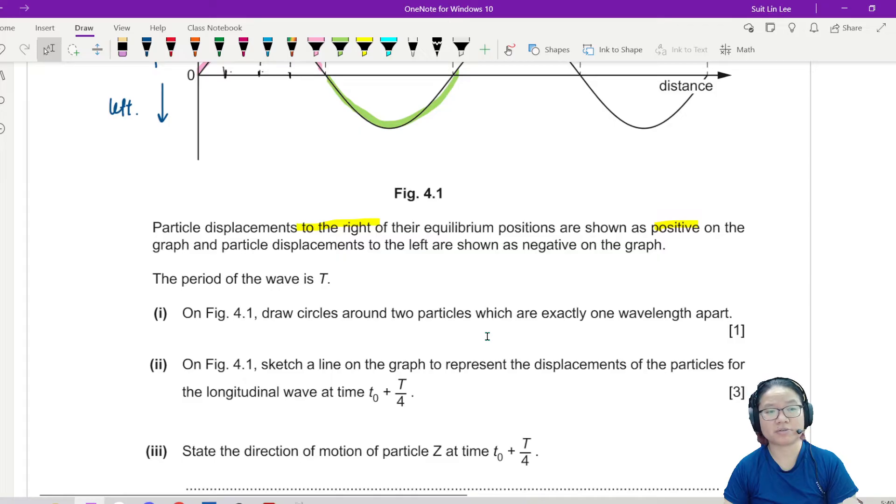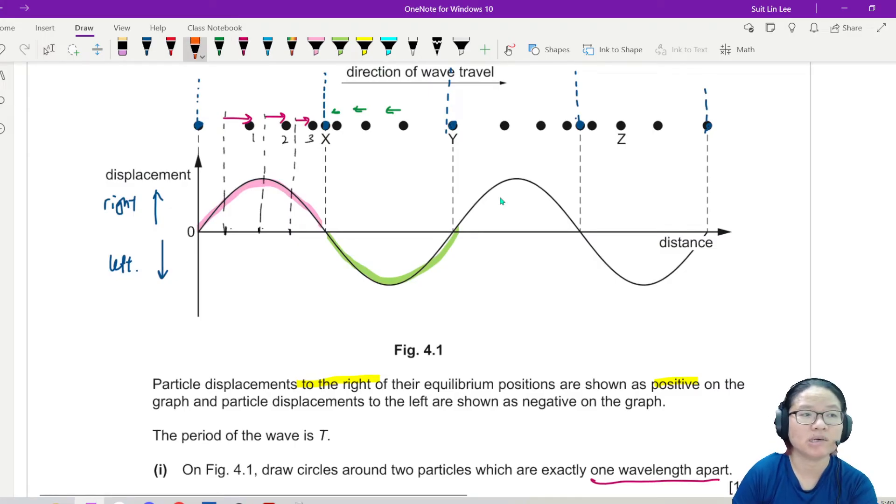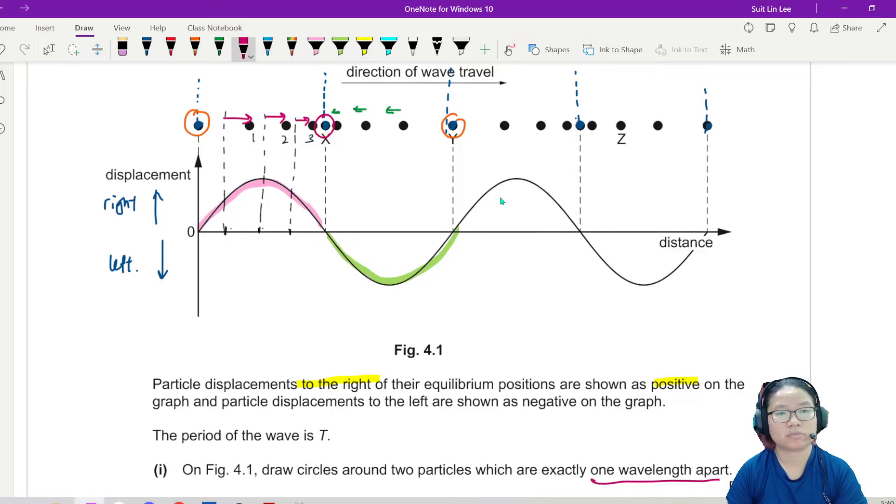On Figure 4.1, draw circles around two particles which are exactly one wavelength apart. So it's pretty easy. You want one wavelength, right? So it can be anywhere. It can be here to here because this is 360 degrees. Or it can be X to this point because here to here is also 360 degrees. It can also be this point and this point because here to here is another 360 degrees. So there are several answers. It's kind of up to you. The reason why you can't use here to here is because there's no particle here.